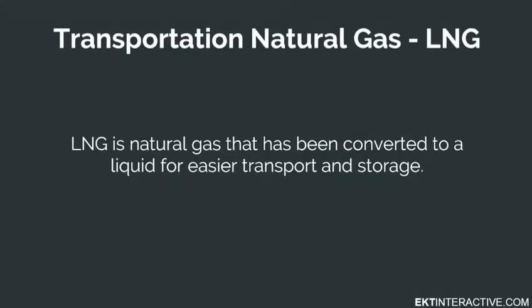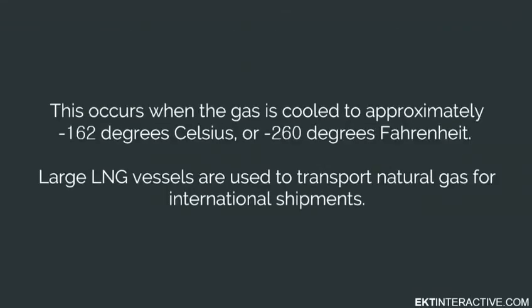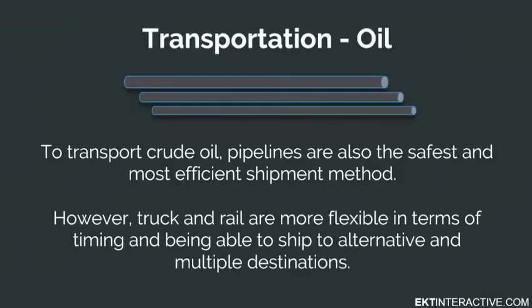LNG is natural gas that has been converted to a liquid for easier transport and storage. This occurs when the gas is cooled to approximately minus 162 degrees Celsius, or minus 260 degrees Fahrenheit. Large LNG vessels are used to transport natural gas for international shipments. To transport crude oil, pipelines are also the safest and most efficient shipment method. However, truck and rail are more flexible in terms of timing and being able to ship to alternative and multiple destinations.